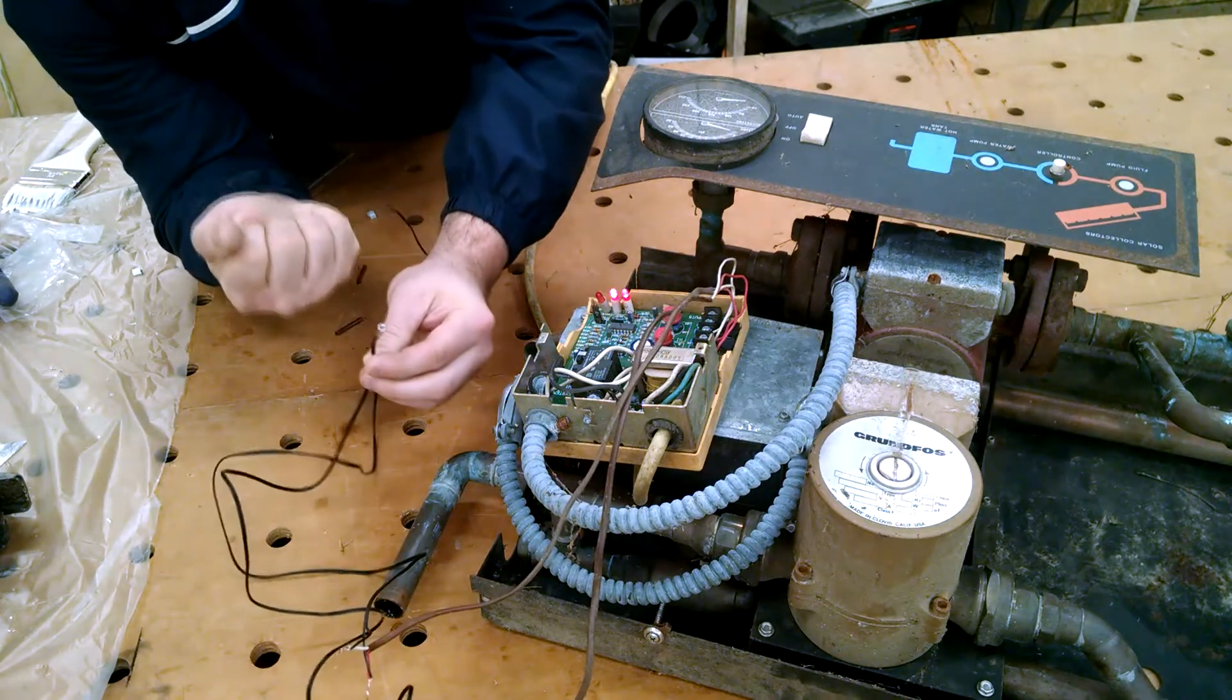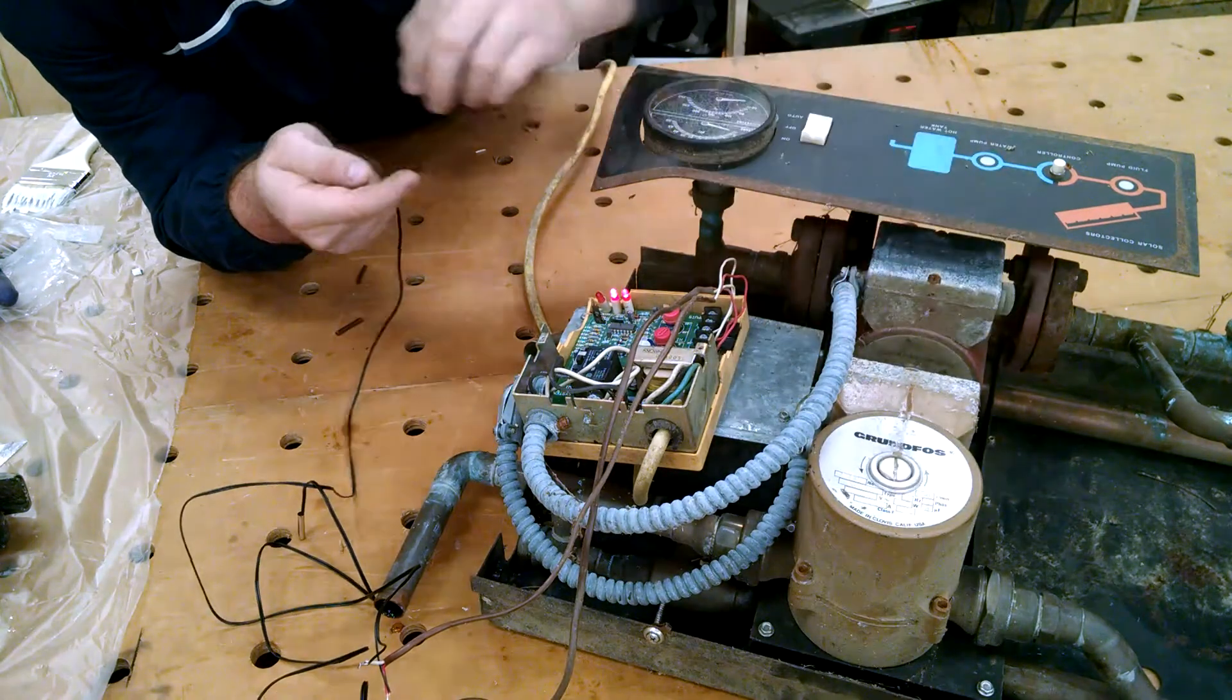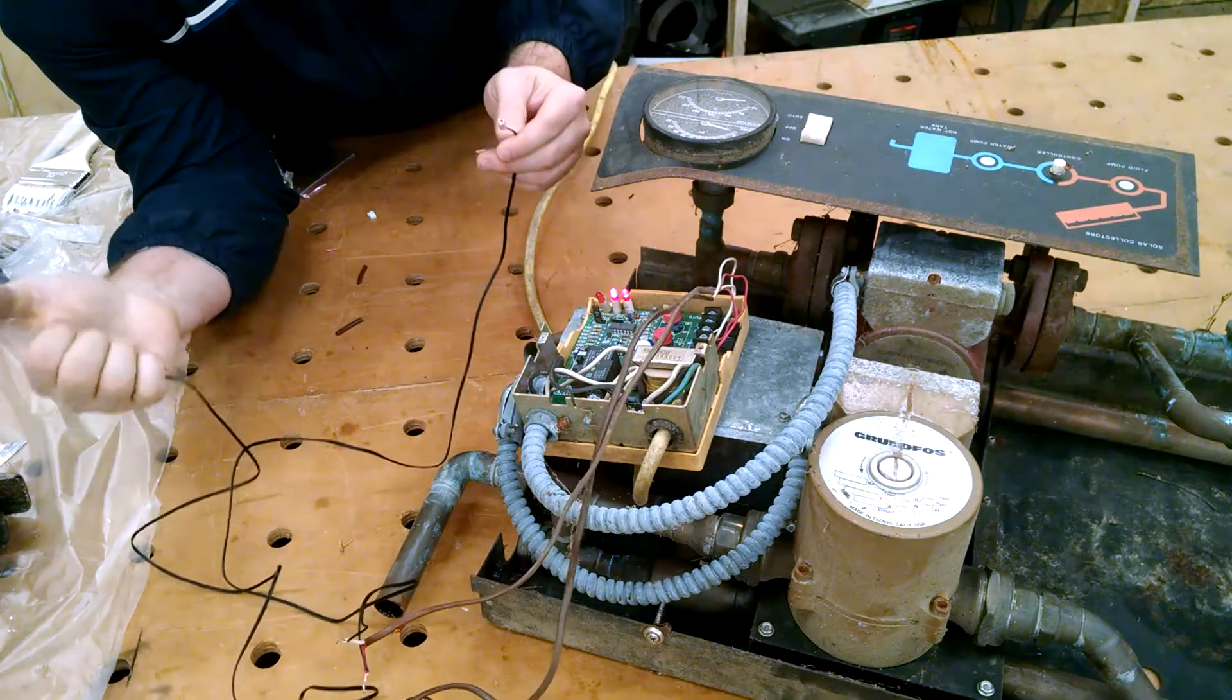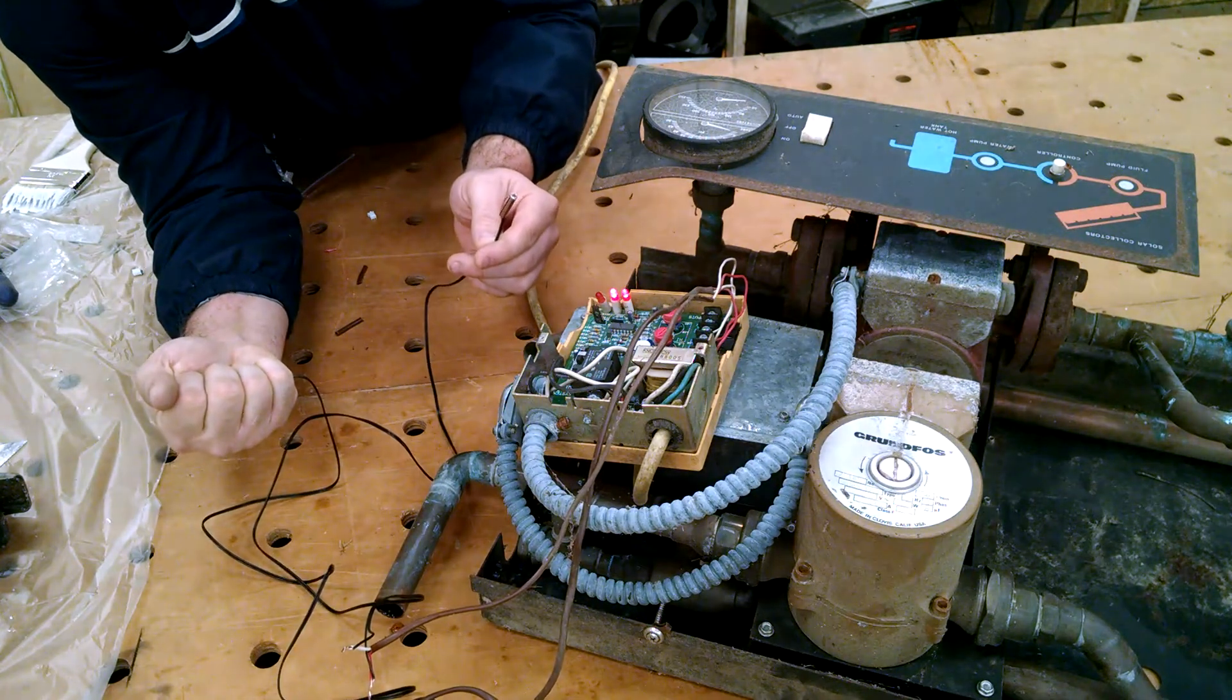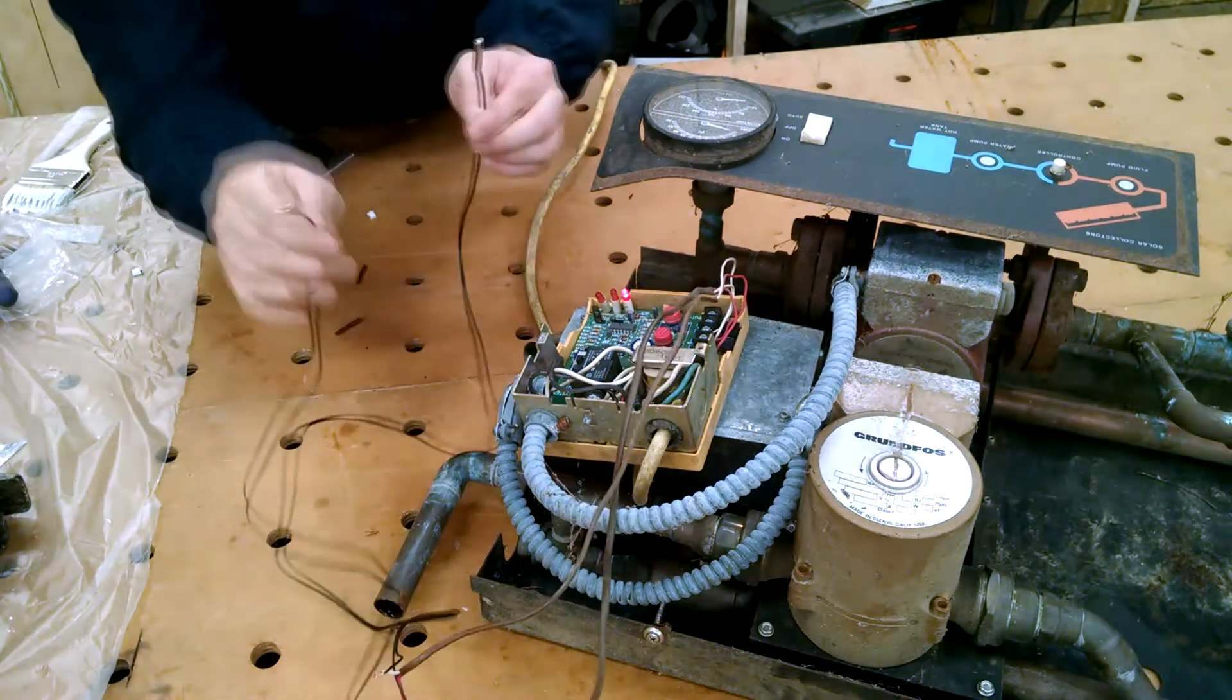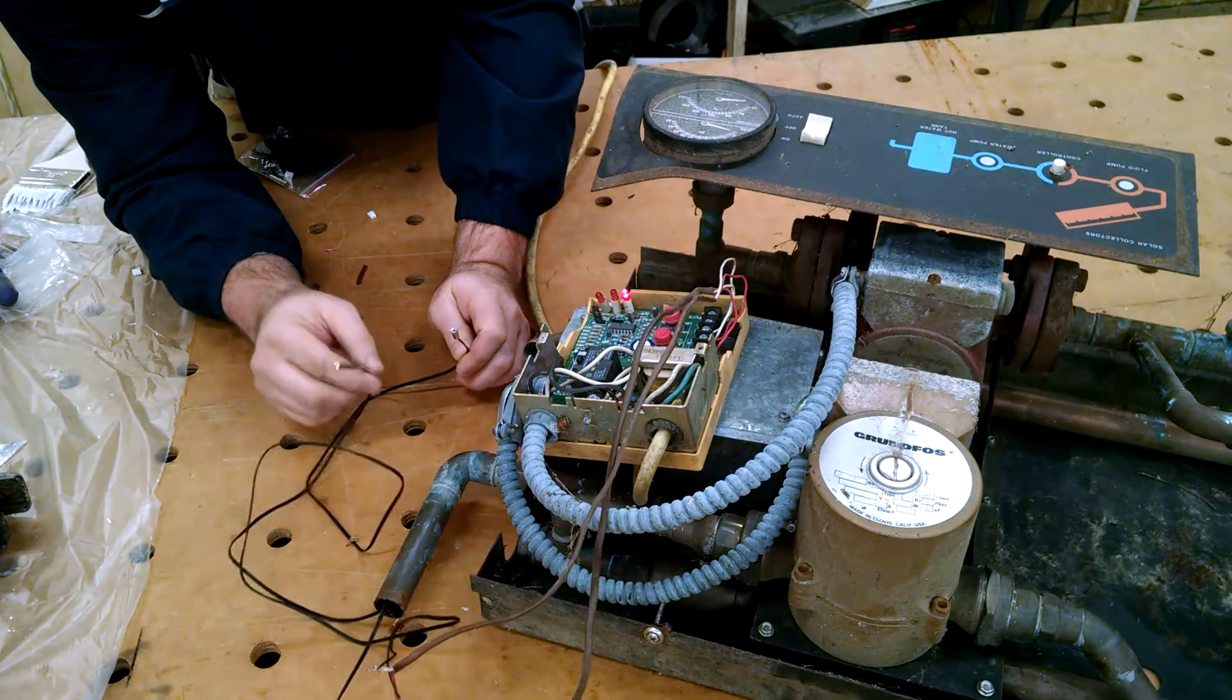So when the, there it goes, so it just kicked on. You can see the LED, you might be able to hear the pumps running. And now I'm going to swap it. And I'm going to say okay now the tank has reached the temperature of the solar panel. And we'll wait for this thing to turn off. There it goes, it just turned off. So that's how these work. When there's a difference in temperature and the solar is hotter, it will turn the pumps on.